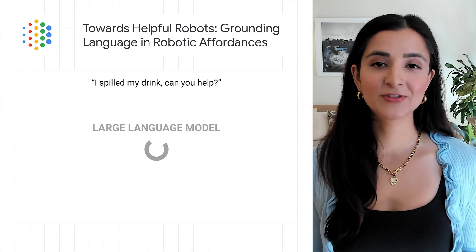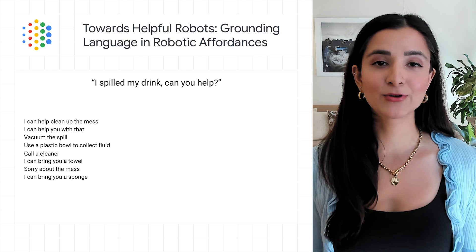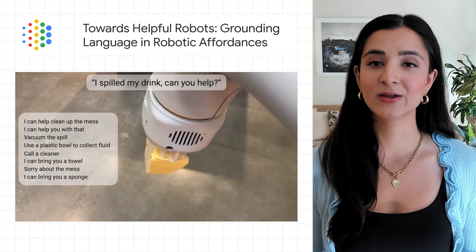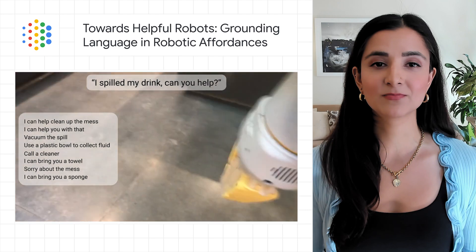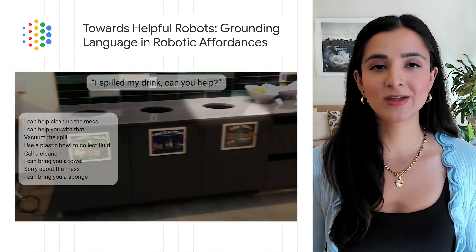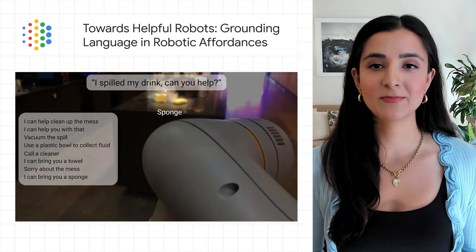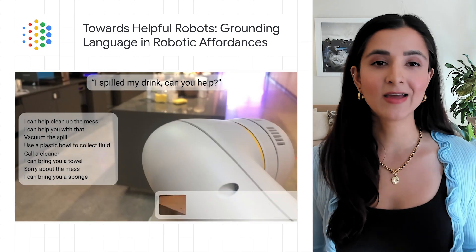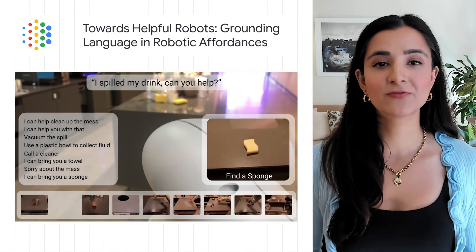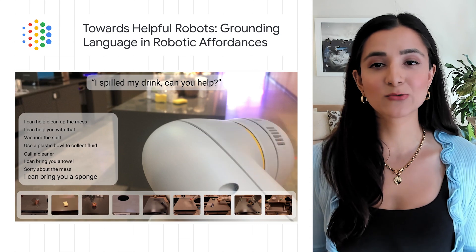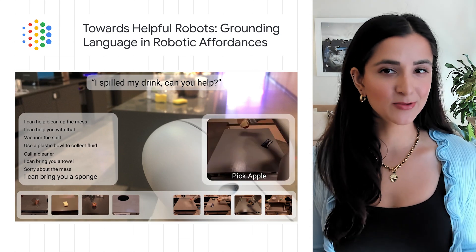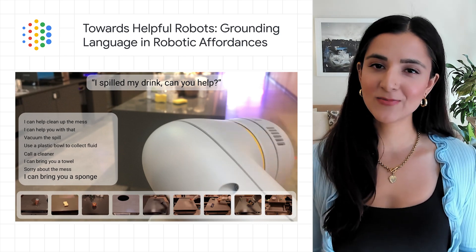More AI news this week comes from the Google AI research team working on robotic learning with advanced language models. Robotic systems today are capable of executing only very short, hard-coded commands, like "pick up an apple," but they struggle with learning to perform long-horizon tasks and reasoning about abstract goals, like "I just worked out, can you get me a healthy snack?"